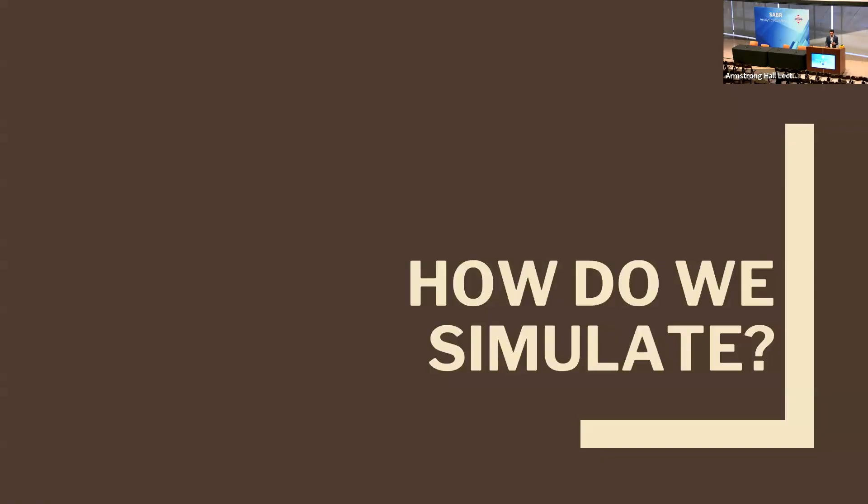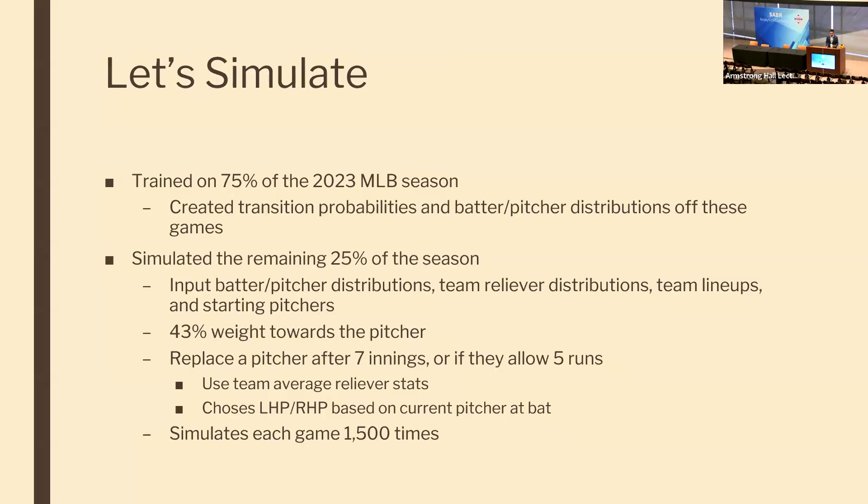Let's do a quick recap: we talked about using Markov chains to move from one state to the next, and using Brier's score to find the best combination of hitter and pitcher stats to predict the outcome. Now, how do we use this to simulate and predict an MLB game?